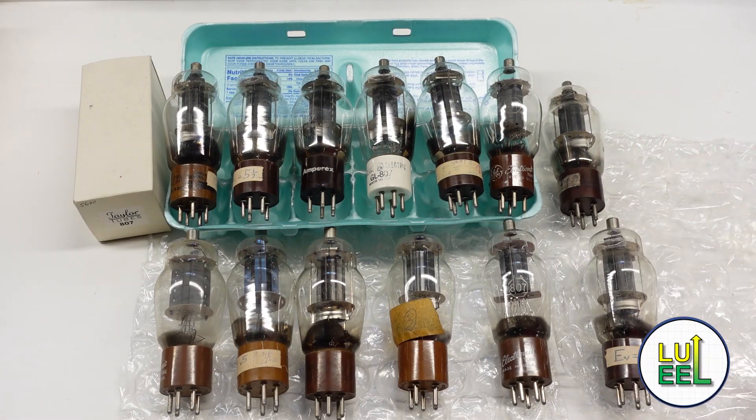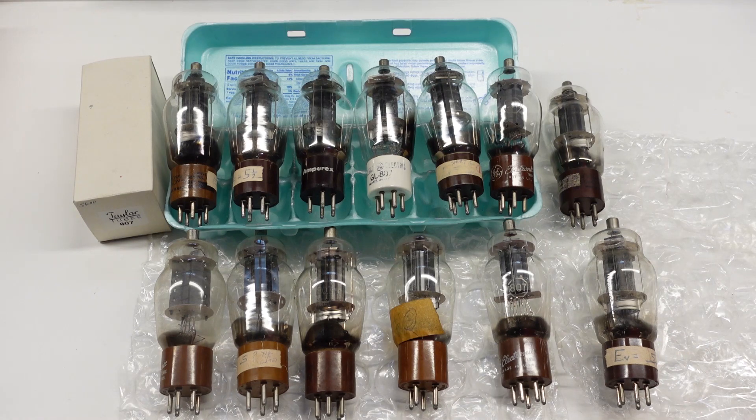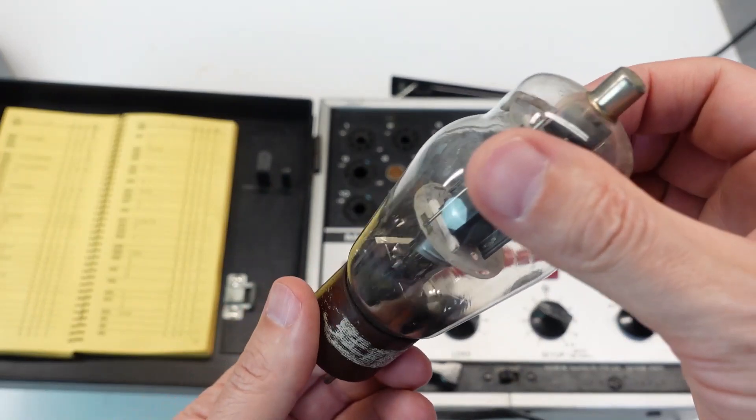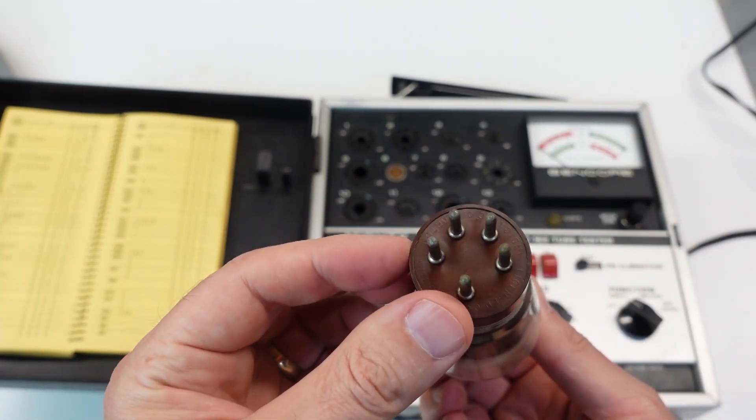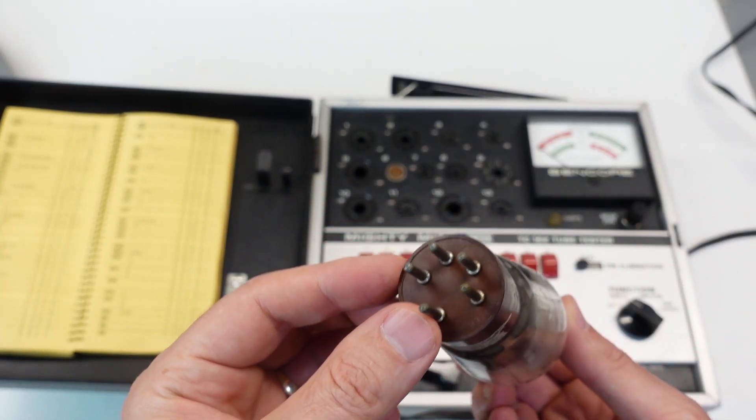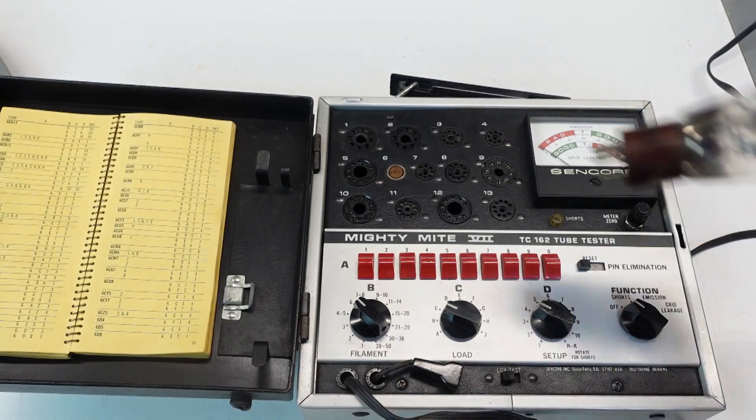In the first episode of this series, I showed my collection of 14 807s, all of which are of uncertain condition. I also mentioned that the 807 is not compatible with my Sencore tube tester, but that I had an idea for an alternative way to test them.